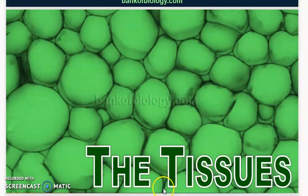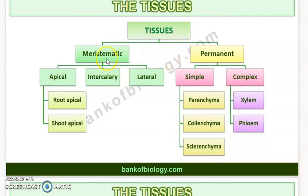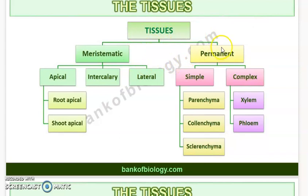Tissues in plants are classified into two main groups: meristematic tissue and permanent tissue. This classification is based on whether the cells are capable of dividing or not. If the cells can divide, they form meristematic tissue; otherwise, they form permanent tissue.